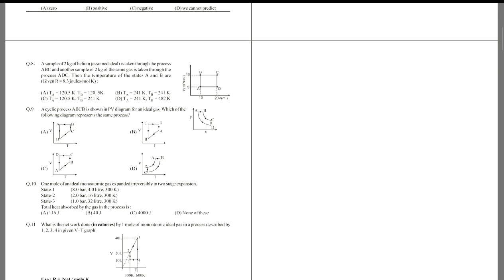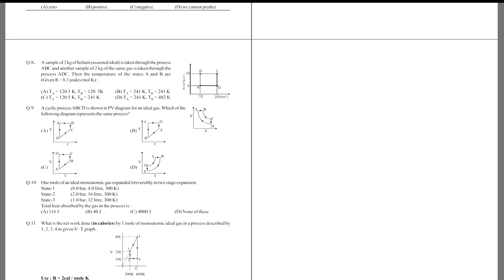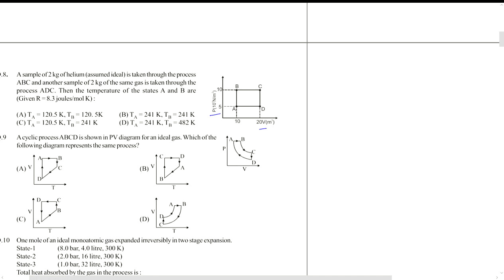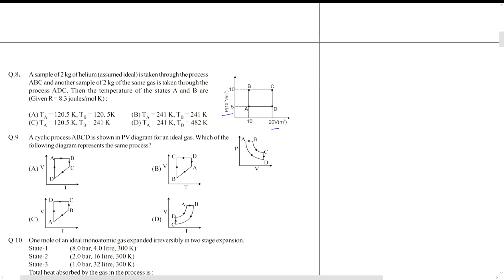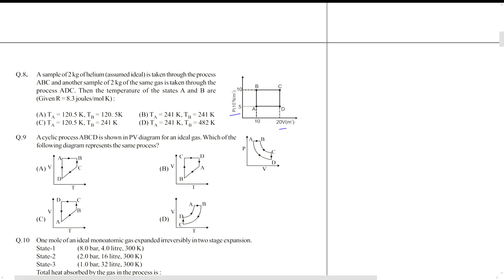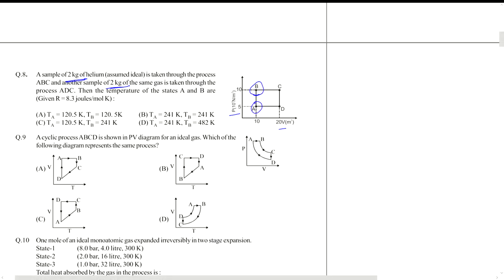Now moving on to the next question, it is question number eight. It says a sample of two kg of helium is taken through a process which is given in a pV graph to us. Now we have two different paths, we have path ABC and ADC for two different gases. We have two kg of helium in both cases. The temperatures of state A and B—because the temperature of state A and B in this case have nothing to do with the processes.